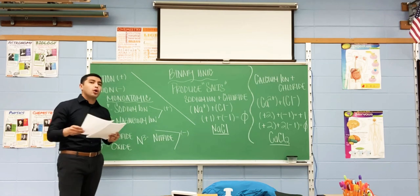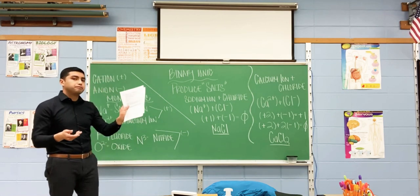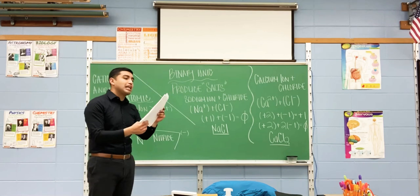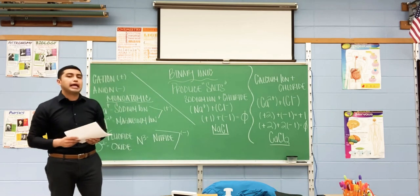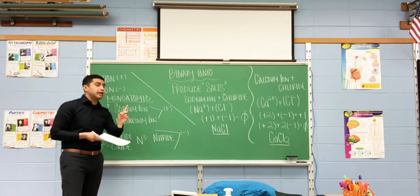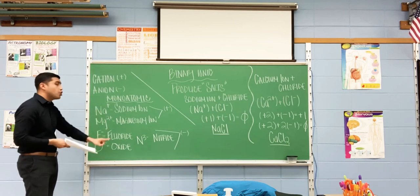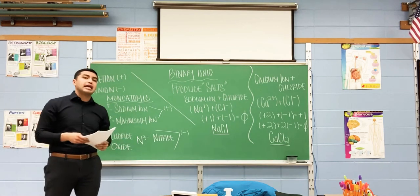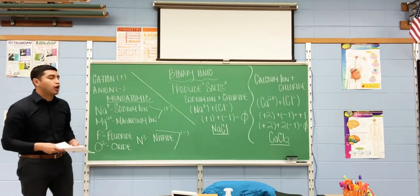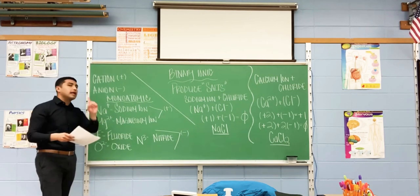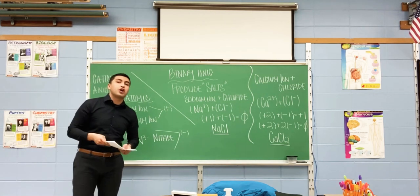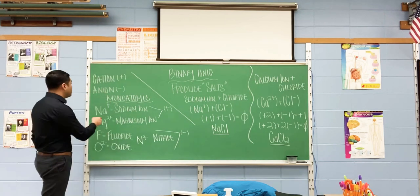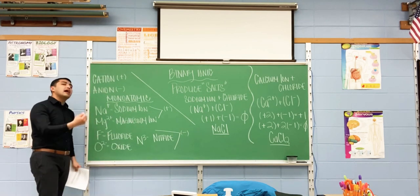When you've located the row, refer to your chart. Your chart says group number one — these elements lose one electron. Sodium always loses one electron. Remember, you lose something negative, and that gives you a positive charge. So if it loses one electron, it also carries a charge of positive one.